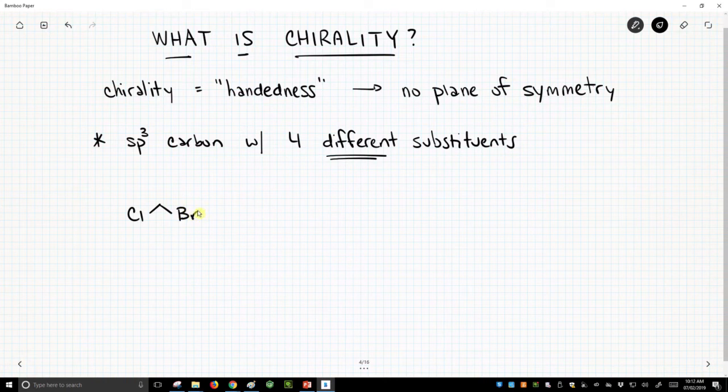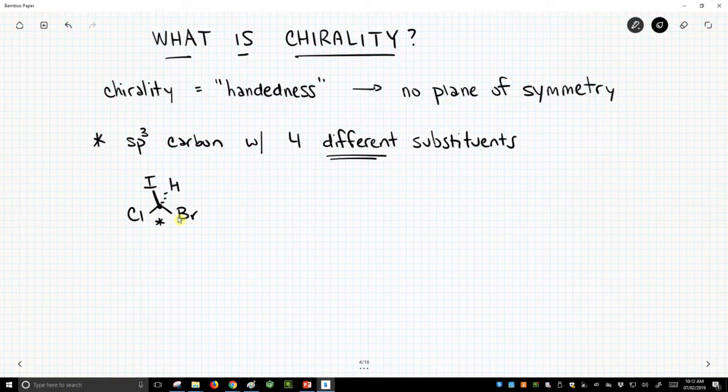It's right in the middle of the molecule connected to the bromine and the chlorine. This carbon right here has four different substituents. That is a chiral carbon. It's a chiral carbon. It does not have a plane of symmetry.